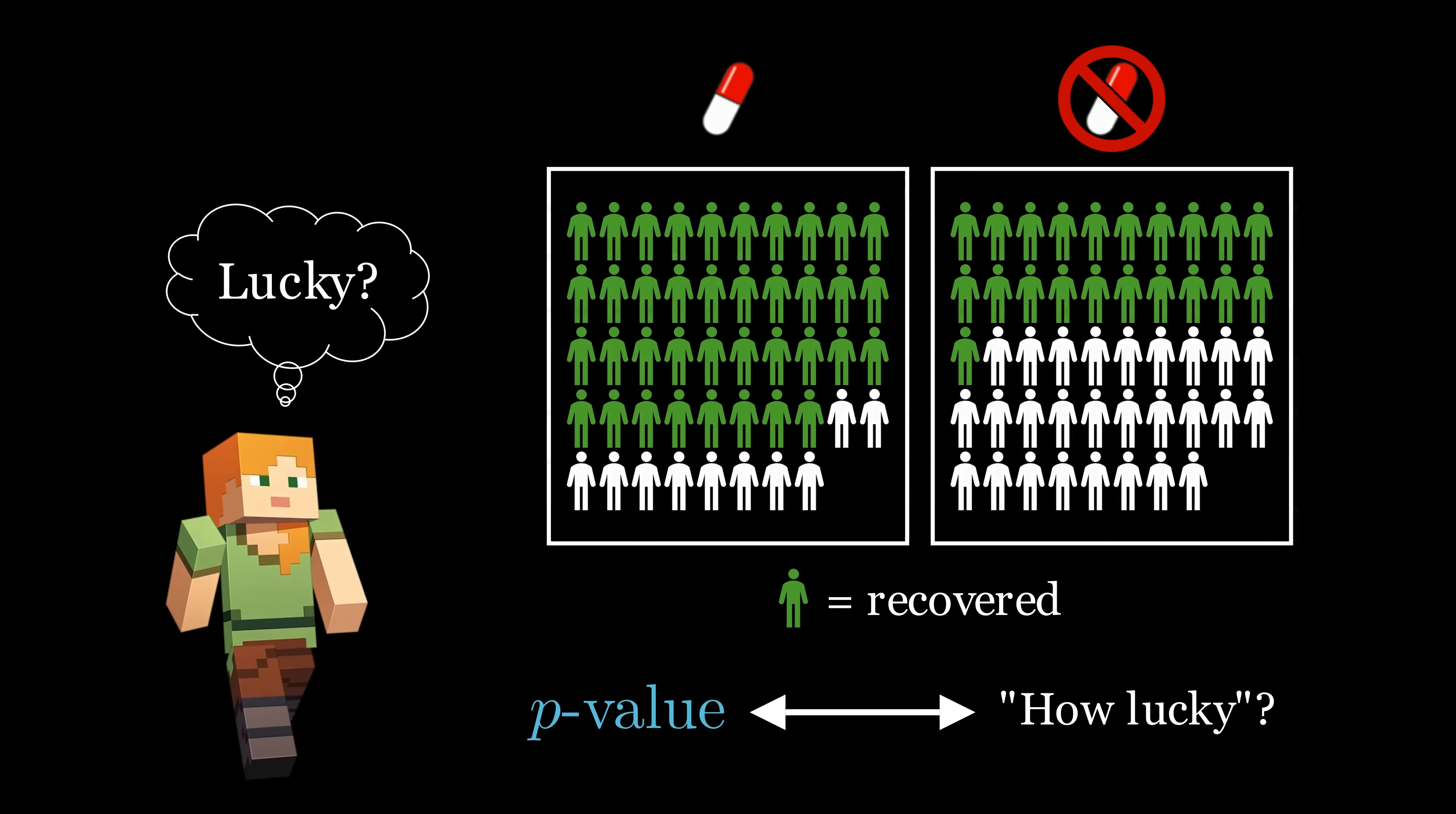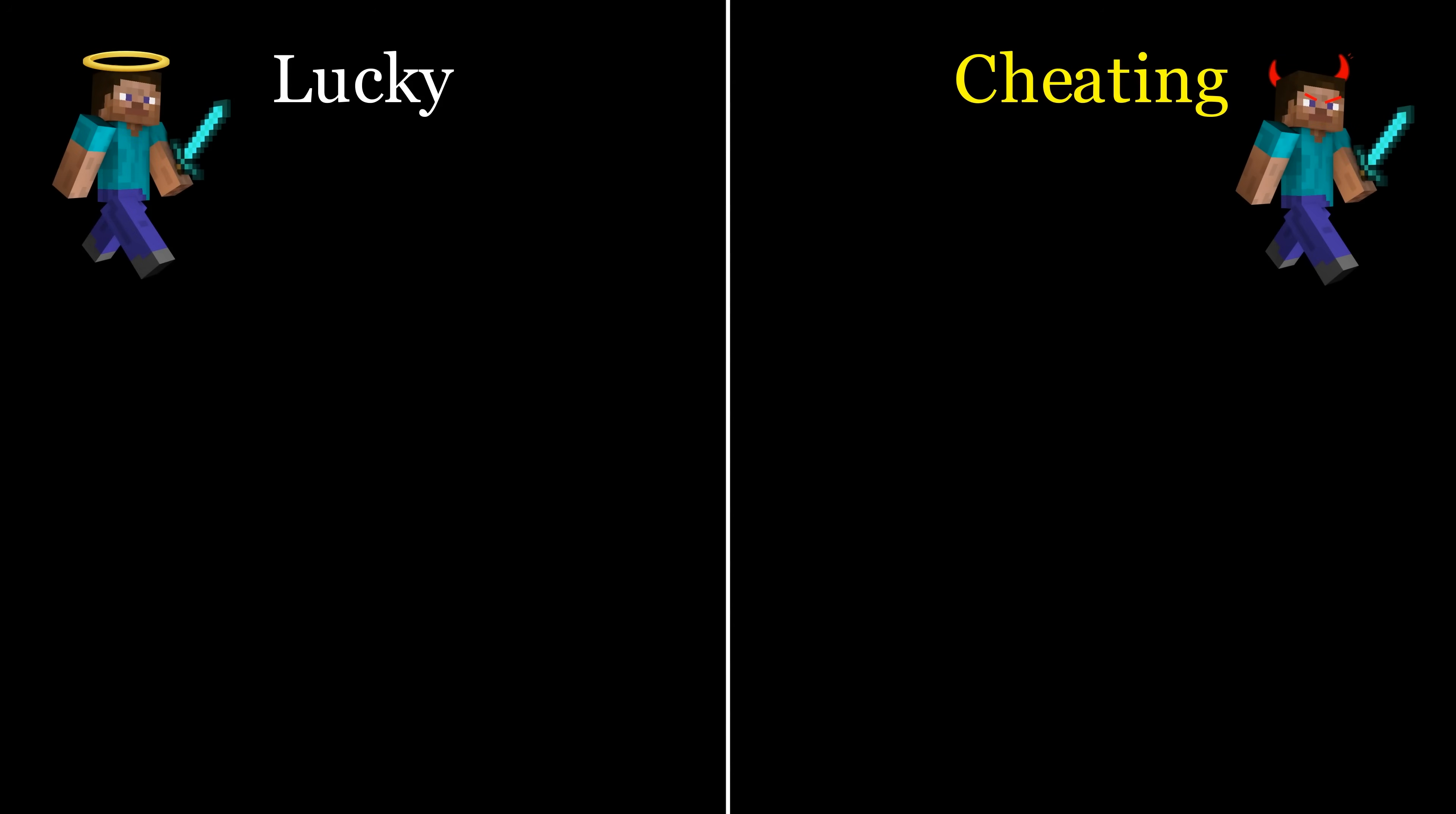So how do we calculate this p-value? Here, we're testing two competing hypotheses. One is that our friend got lucky, and the other is that they cheated.